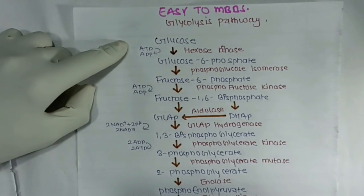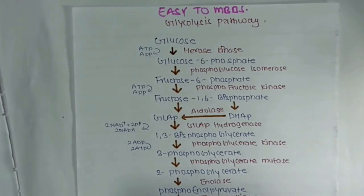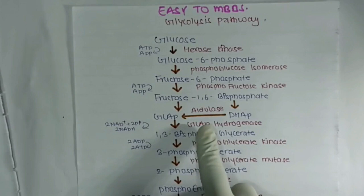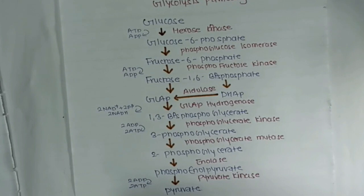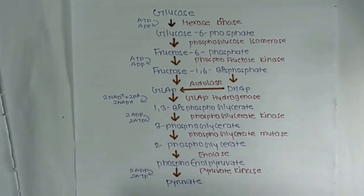Now we see the complete glycolysis pathway. Glucose with enzyme hexokinase gives glucose-6-phosphate. With enzyme phosphoglucose isomerase it gives fructose-6-phosphate. With enzyme phosphofructokinase it gives fructose-1,6-bisphosphate. With aldolase it forms GLAP and DHAP. With glyceraldehyde-3-phosphate dehydrogenase it gives 1,3-bisphosphoglycerate. With phosphoglycerate kinase it gives 3-phosphoglycerate. With phosphoglycerate mutase it gives 2-phosphoglycerate. With enolase it gives phosphoenolpyruvate. And with pyruvate kinase it gives pyruvate.